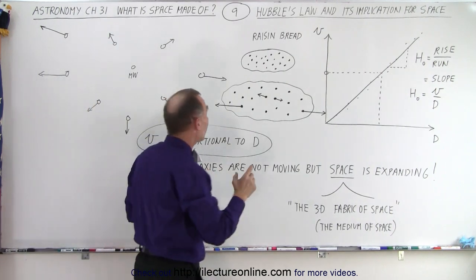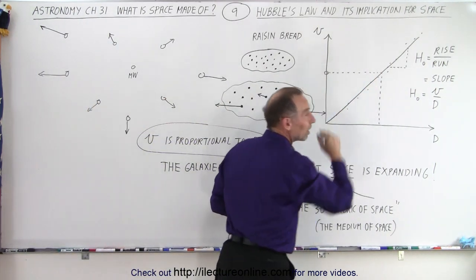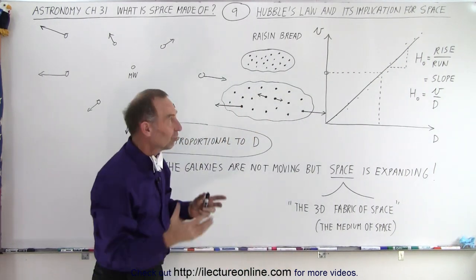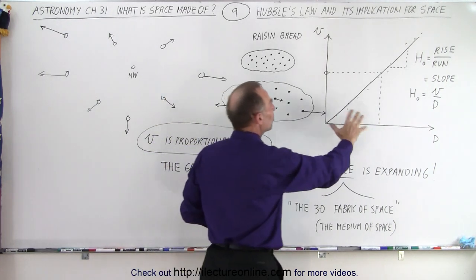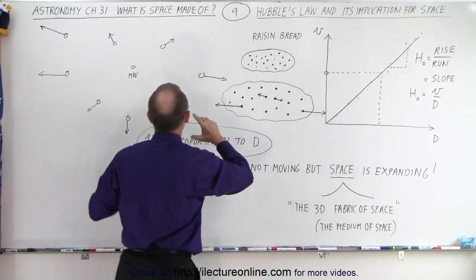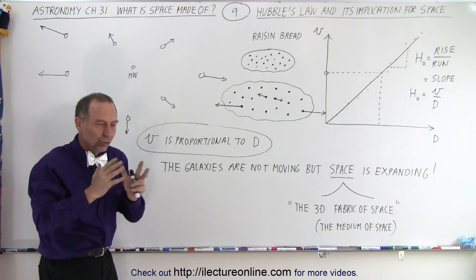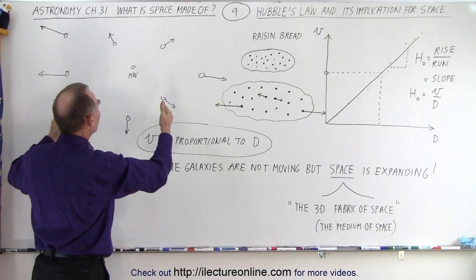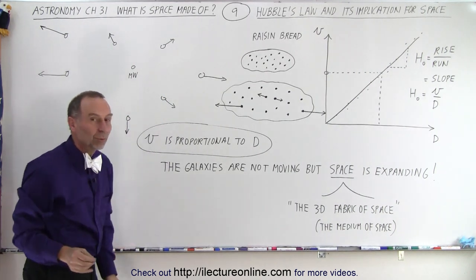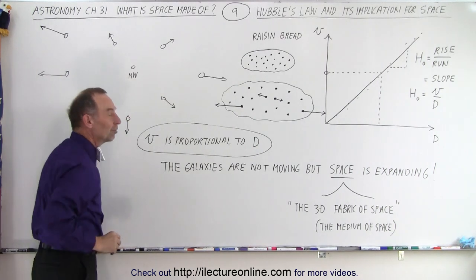And the reason why I believe that's the case is because of that perfect linear relationship. Twice the distance, twice the speed. Three times the distance, three times the speed. The only way this could be explained was that it's not the galaxies that were moving, because there's no way that we can presume any sort of theory that would allow galaxies to move away from each other proportional to the distance between them, unless it was space in between them that was actually expanding.